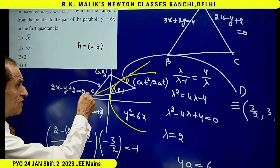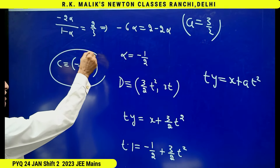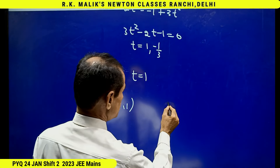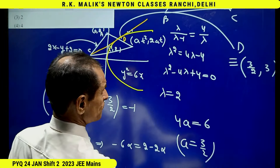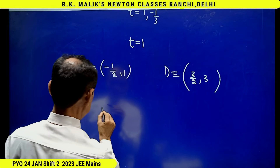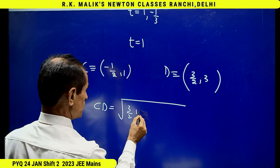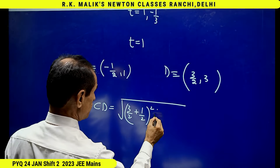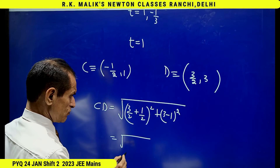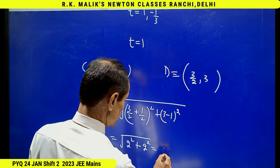The distance between C and D gives the length of the tangent. With C being (minus 1 by 2, 1) and D being (3 by 2, 3), CD equals the square root of (3 by 2 plus 1 by 2) squared plus (3 minus 1) squared, which equals the square root of 2 squared plus 2 squared, that is 2 root 2.